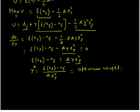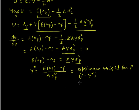Y-star is our optimum weight in the risky portfolio P, which also means the weight on the risk-free asset is 1 minus Y-star. If we do a graphical analysis according to these weights, what we obtain is known as the Capital Allocation Line.